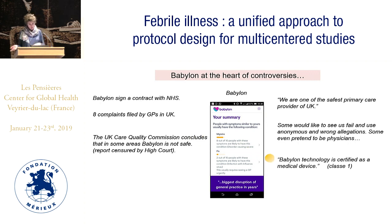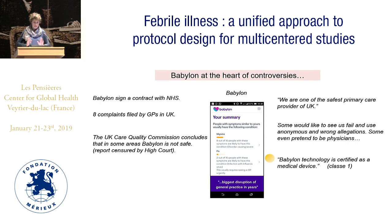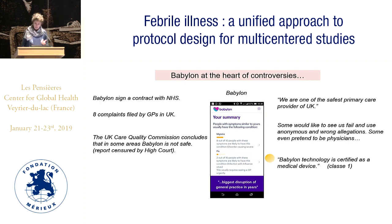Babylon then tried to certify themselves as a medical device class 1, but in fact this type of technology should be class 2B because you are making a diagnosis. With class 1, the advantage for them is that you escape all validation studies — you don't need to show that you do not harm the patient.